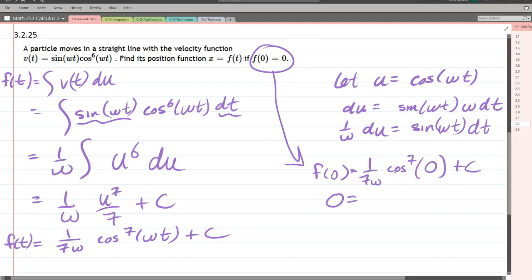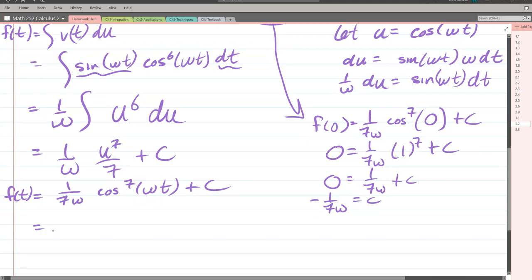All right, cosine of zero is one, one to the seventh power plus constant. One to the seventh power is just one. So we got zero equals one over seven ω plus c. We can subtract: negative one over seven ω is our constant. And then we're just going to plug that back in, minus one over seven ω. And that is our f of t function.